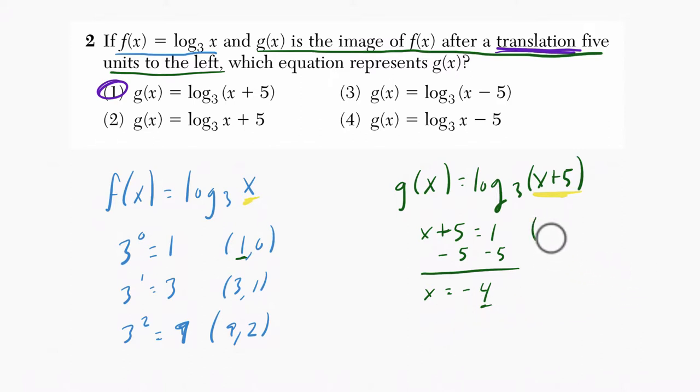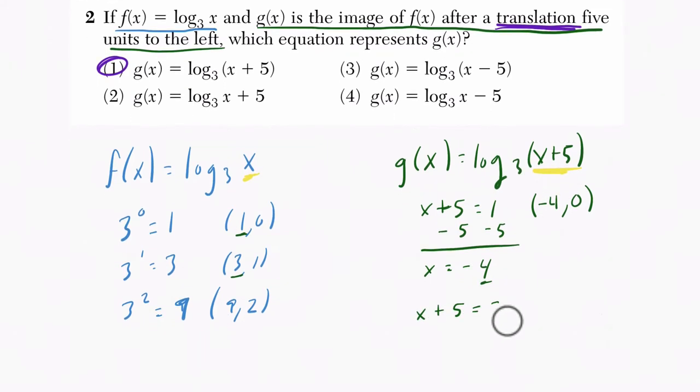So our new point is negative 4. When x is negative 4, we get negative 4 plus 5, which is 1, and the output would be 0. And then likewise here, if I want an input of 3, what do I have to do here? Well, when is x plus 5 going to equal 3? I subtract 5 from both sides, and that gives me x equals negative 2. So I'll have the same input when x is negative 2, because negative 2 plus 5 is 3, and then the output would be 1. So that matches here, which is the shift to the left by 5.